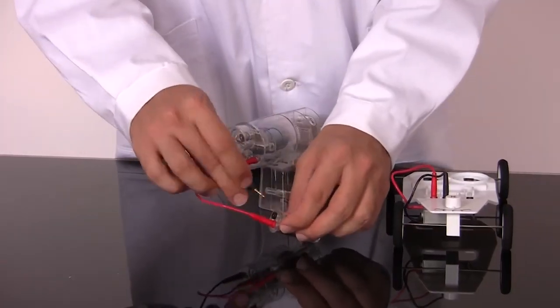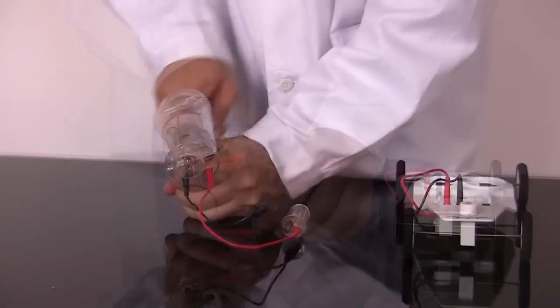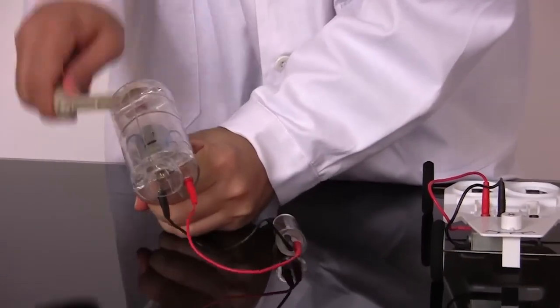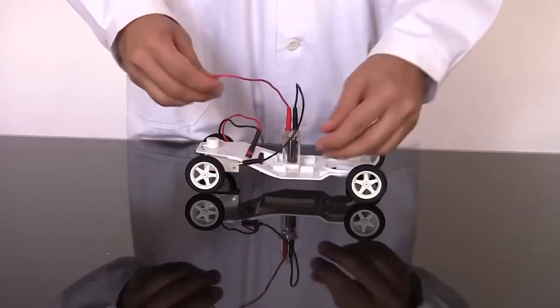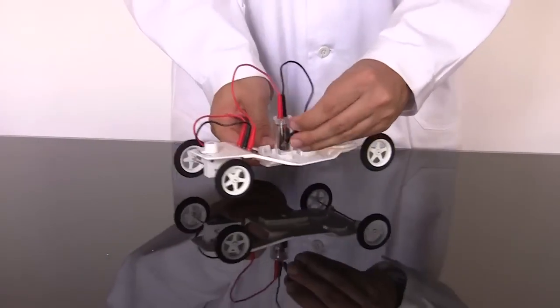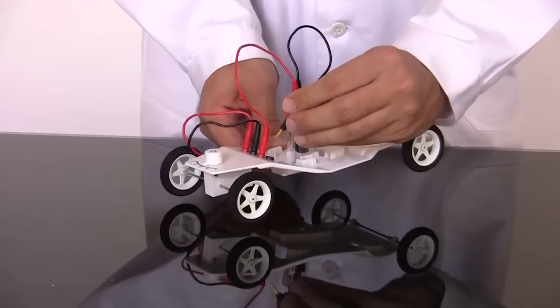The supercapacitor can also power the car. Charge the supercapacitor with the hand crank generator as before. Secure the supercapacitor to the middle of the car chassis and connect it to the motor. Then watch it go.